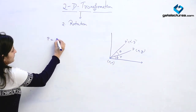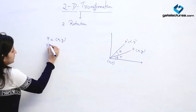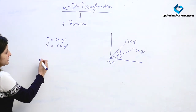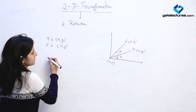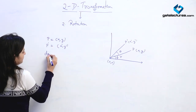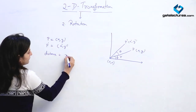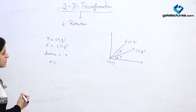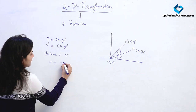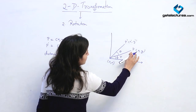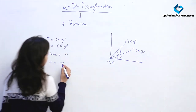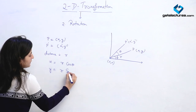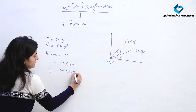Here we have a point P which we are rotating by an angle theta, and the distance is r. We know that x equals r cos phi and y equals r sin phi.